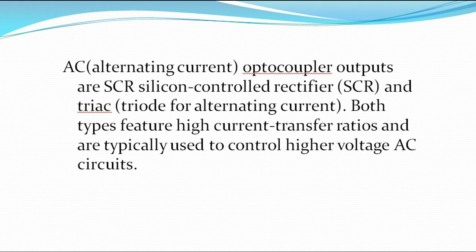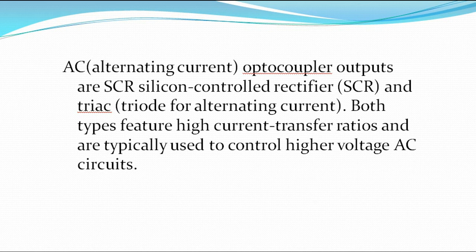AC being alternating current optocoupler outputs are silicon controlled rectifier and TRIAC, which means triode for alternating current. Both types feature high current transfer ratios and are typically used to control higher AC loads safely. The current transfer ratio of this AC type is much greater than in the photodarlington and phototransistor types. The AC type has a much higher current transfer ratio than the DC aspect.